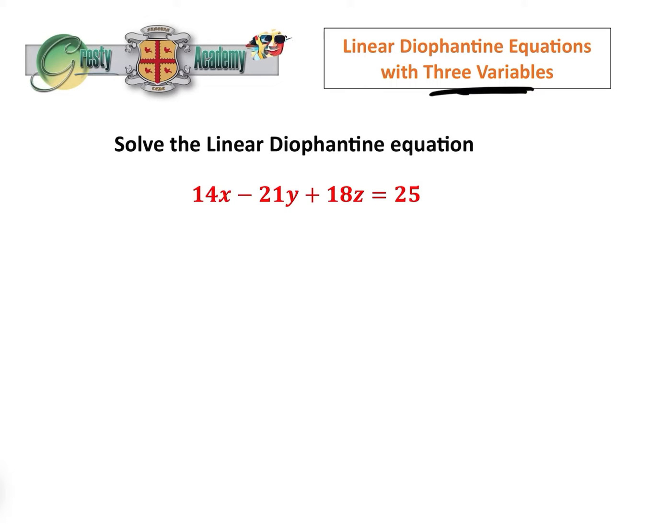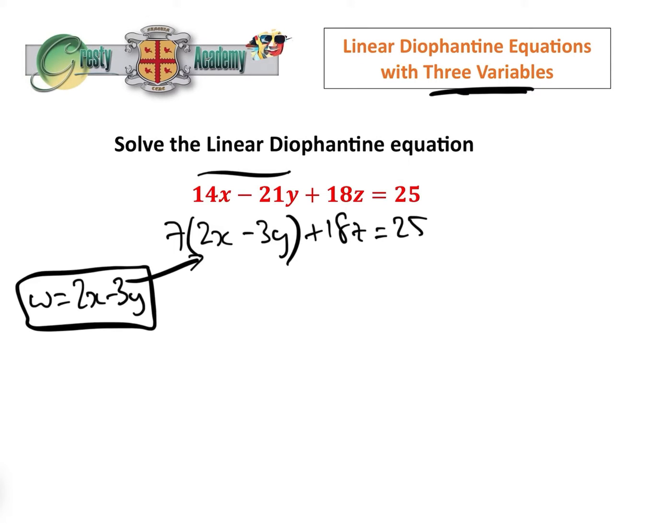How are we going to start this? What we need to do is reduce the three variable equation to a two variable equation and then we can solve the two variable Diophantine equation in a more rigorous way. Let's take out the seven here. So that's 2x minus 3y plus 18z equals 25. Then we're going to let w equal 2x minus 3y.